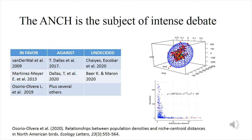There are also undecided people saying there is a relationship but it is non-linear, which would be in agreement with what Osorio-Olvera et al. said. You can see to the right the kind of data that Luis Olvera has been publishing with collaborators in that paper in Ecology Letters. You see there is a relationship meaning that the farther apart you are from the centroid of the niche — which is modeled as an ellipsoid — the lower the abundance you will find.